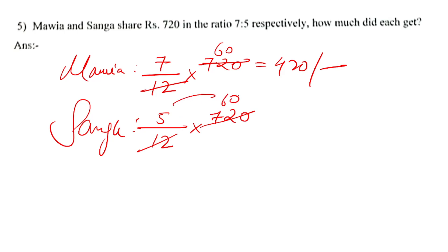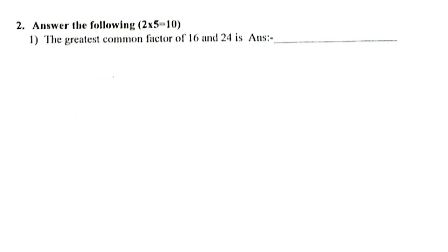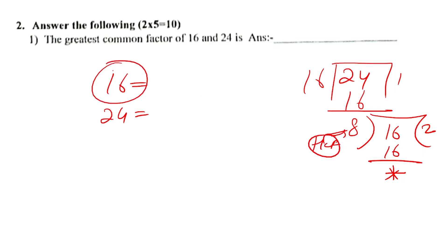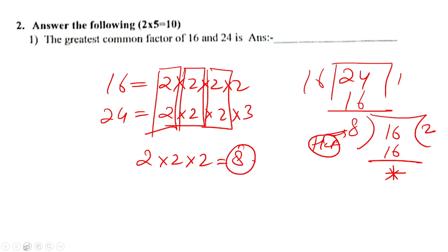Next question: Find the greatest common factor of 16 and 24. First method: divide both by their common divisor. 16 divided by 8 is 2, and 24 divided by 8 is 3. Since 16 is a multiple of 8 with no remainder, 8 is the HCF.